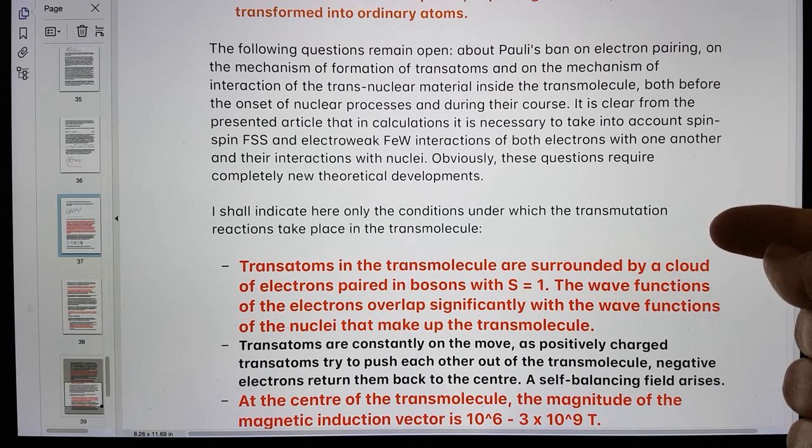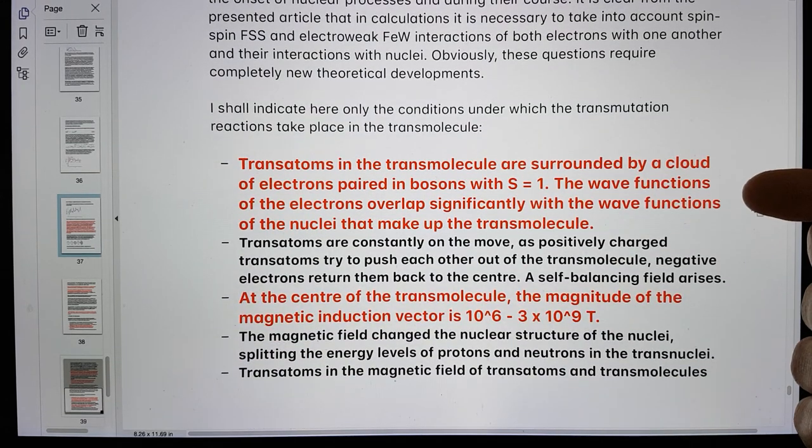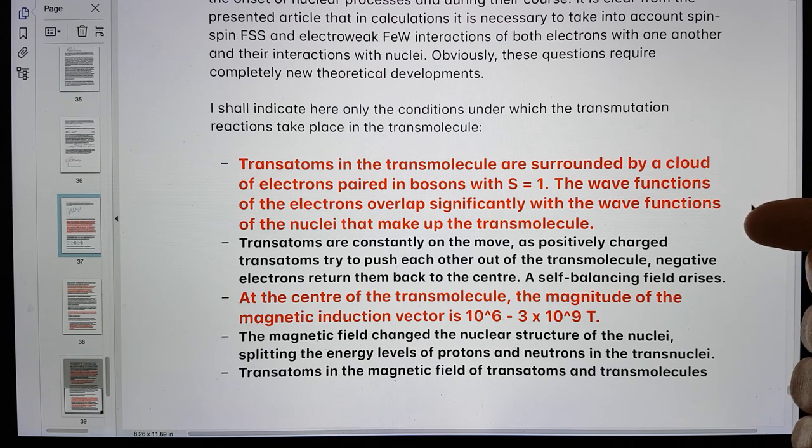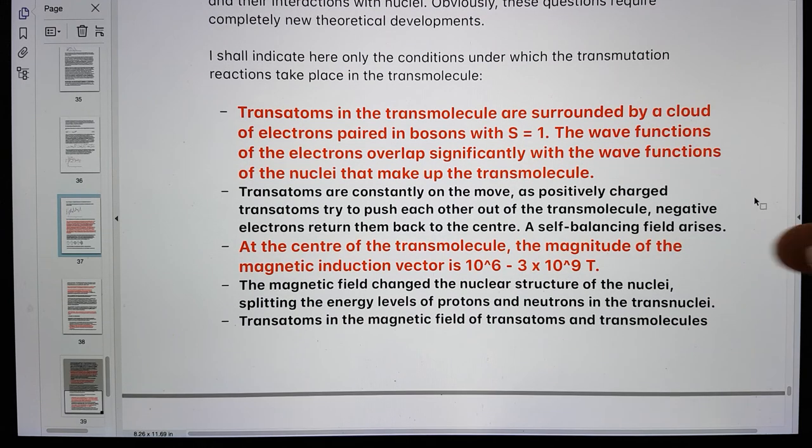I shall indicate here only the conditions under which the transmutation reactions take place in the transmolecule. Transatoms in the transmolecule are surrounded by a cloud of electrons paired in bosons with S equals 1. The wave functions of the electrons overlap significantly with the wave functions of the nuclei that make up the transmolecule. Transatoms are constantly on the move. As positively charged transatoms try to push each other out, negative electrons return them back to the center. A self-balancing field arises.